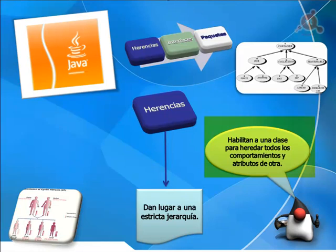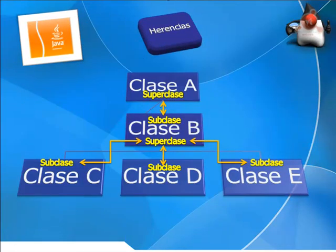Las herencias en Java dan lugar a una estricta jerarquía. Todas las clases, tanto las de la librería Java como las de elaboración propia, están ordenadas dentro de esta estricta jerarquía. Una clase que hereda de otra clase se le llama subclase, y la clase que da la herencia es llamada superclase. Una clase que sea superclase de otras puede a su vez ser subclase de una que esté dentro de esa jerarquía en un escalón superior.